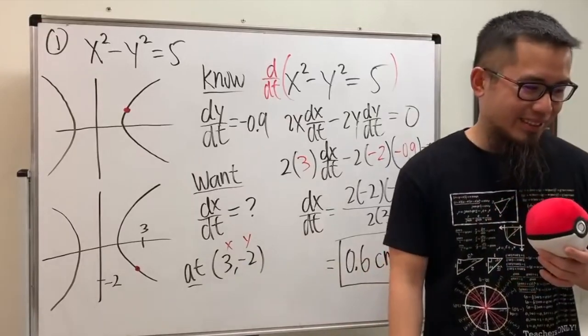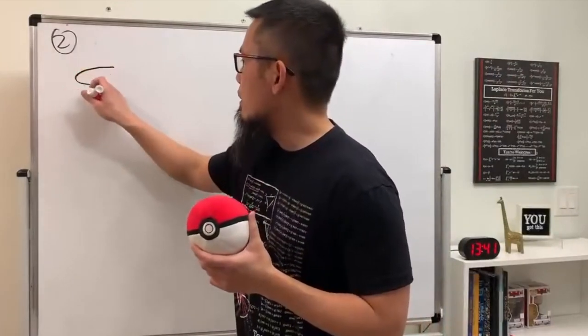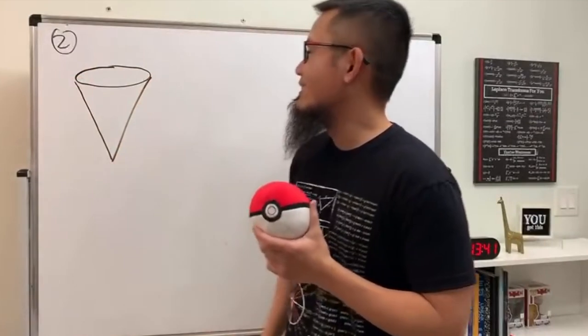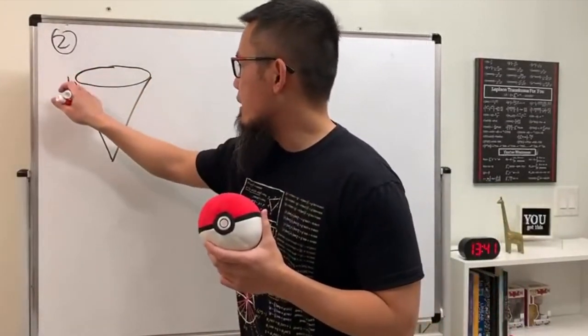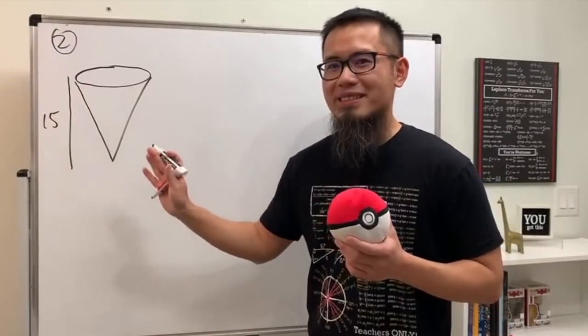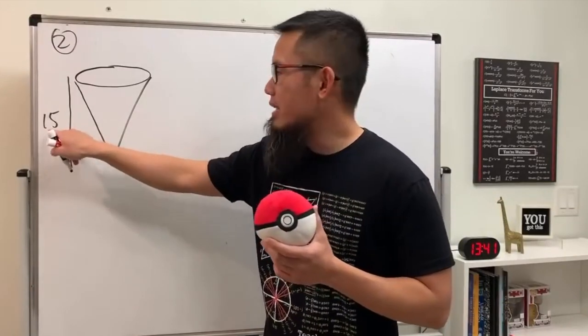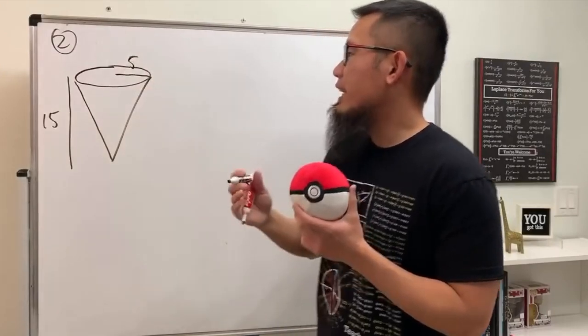Problem two: water is going into a conical tank at the rate of 9 cubic feet per minute. The tank stands pointing down and has a height of 15 feet and a base radius of 5 feet. This is the typical cone question. Here's your tank — it's an inverted cone — with height 15 feet and radius 5 feet.